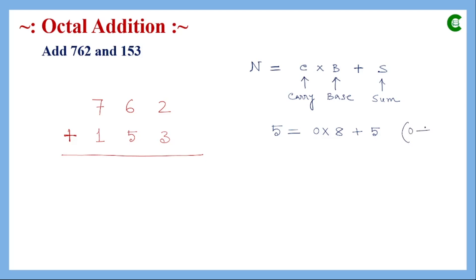The S value must be between zero and seven. If it exceeds seven, that value will be forwarded to the next significant bit as a carry. Since five is within range, there is no carry. The base for octal is always eight. So in this position we write five.